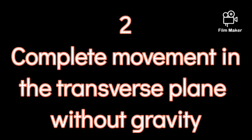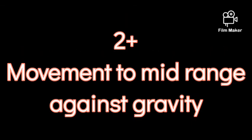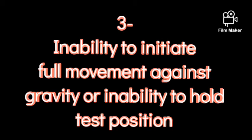Two represents complete or full movement performed in the transverse plane without gravity. Two plus means ability to initiate movement up to halfway against gravity. Three minus represents inability to complete movement against gravity, or inability to hold the test position.